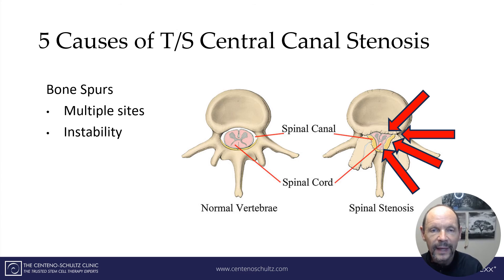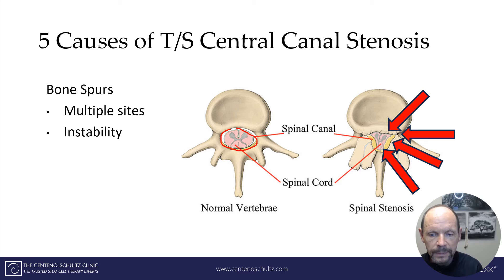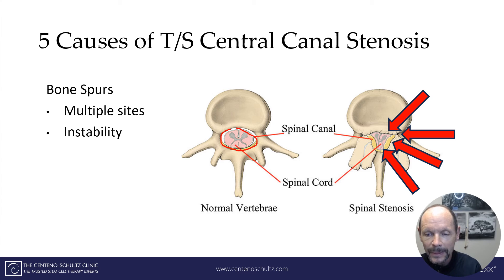The fourth cause of narrowing of this very important canal is a bone spur. A bone spur can occur at any of these levels — it can occur on the backside of the disc, in the foramen, which is basically the doorway where the nerve comes out, the facet, or posterior along the ligamentum flavum.